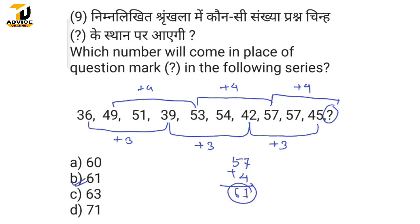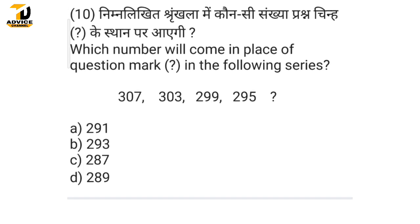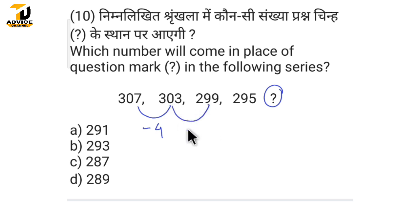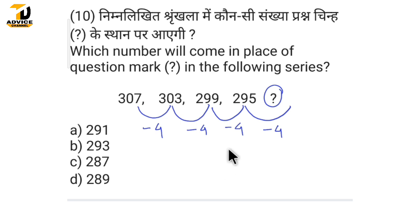The next question: what is the question mark? The difference between 307 and 303 is minus 4. The difference between 303 and 299 is minus 4. Continuing this pattern, the answer is 291. The right answer is Option A.